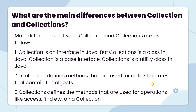What are the main differences between Collection and Collections? Collection is an interface in Java, but Collections is a utility class in Java. Collection is a base interface. Collections is the utility class. Collection defines the methods used for data structures that contain objects. Collections defines the methods used for operations like sort, access, and search.